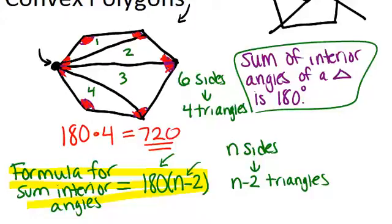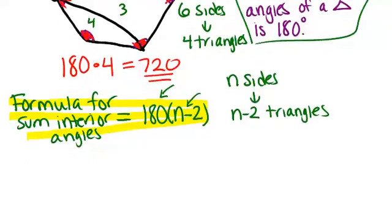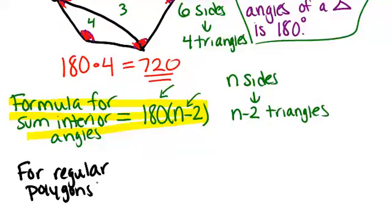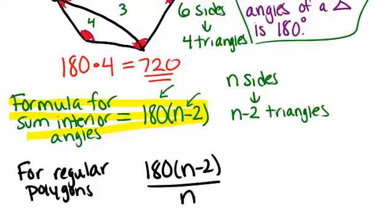Now if your polygon is a regular polygon, which means that all the sides and all the angles are congruent, then you can actually figure out what each individual interior angle is by taking the sum 180 times n minus two and dividing by the number of angles that there would be, which is n. And this gives you one angle.